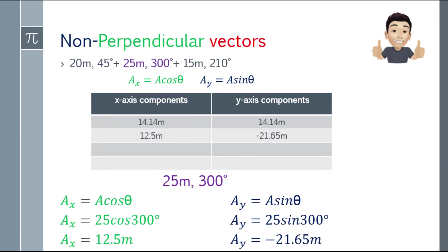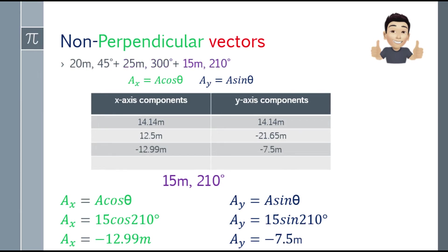Next: 25 meters at 300 degrees. Same process. For x: 25 cosine 300° = 12.5 meters. For the y-axis: 25 sine 300° = negative 21.65 meters. And lastly: 15 meters at 210 degrees. For x: 15 cosine 210° = negative 12.99 meters. For y: 15 sine 210° = negative 7.5 meters.